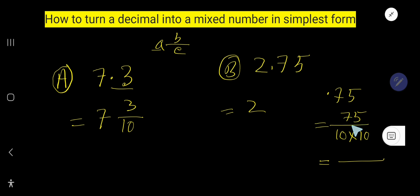So if you divide 75 by 5, what will happen? 75 divided by 5, and 100, if you divide by 5, what will happen?